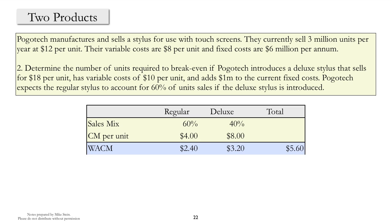To address the second problem, we're going to need to calculate a weighted average contribution margin. PogoTech now has two products: the first product has a contribution margin of $4 per unit, and a second deluxe product that has a contribution margin of $8 per unit. PogoTech expects 60% of total units to be regulars and therefore 40% will be deluxes. We use this information to calculate a weighted average contribution margin of $5.60.